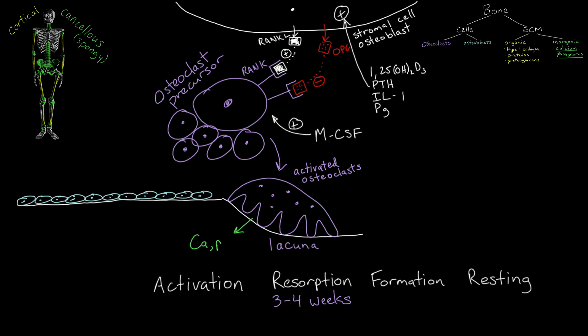Because calcium and phosphorus are released into the blood from the matrix, I always remember that osteoclasts create calcium. Osteoclasts then disappear from the resorption pits.